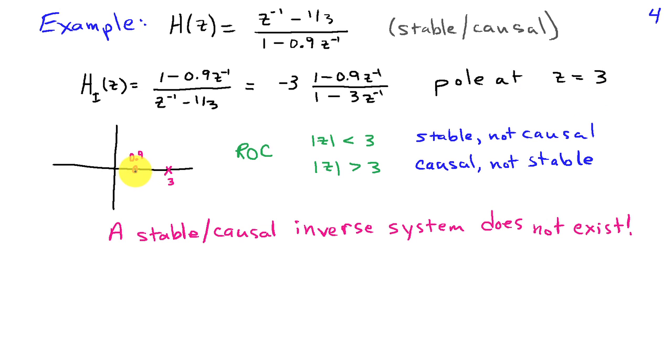I have a zero at z equals 0.9 and a pole at z equals 3. Whereas in the original system, I had a pole at 0.9 and a zero at z equals 3. If I think about trying to find the impulse response, I could make two choices for the region of convergence. If I chose magnitude of z less than 3 to be the region of convergence, that is, this interior region, then I would be including the unit circle, and I would have a stable inverse system. But the problem is it would be left-sided, and it would not be causal.